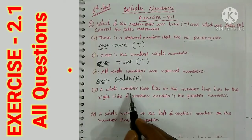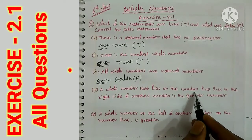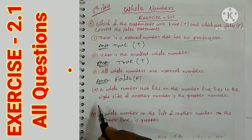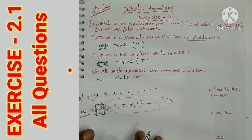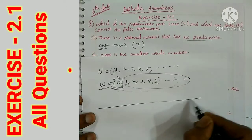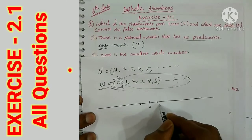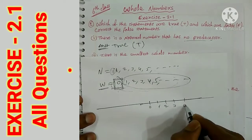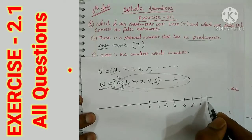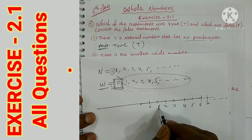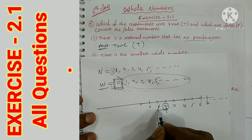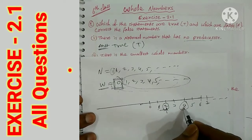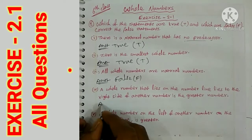Fourth bit: a whole number that lies to the right of another number on the number line is the greater number. On the number line 0, 1, 2, 3, 4, 5, 6, 7... the number to the right is always greater. For example, 4 is to the right of 3 and 4 is greater than 3. So this statement is true.